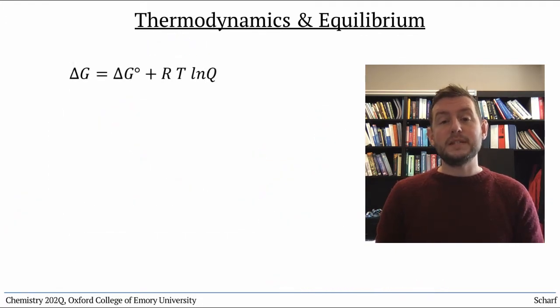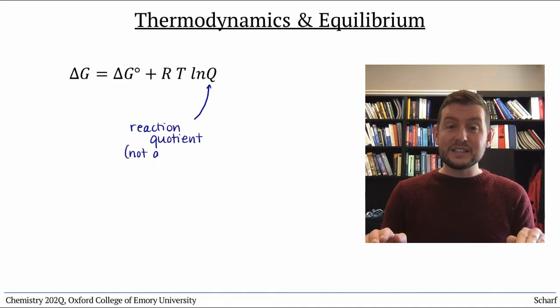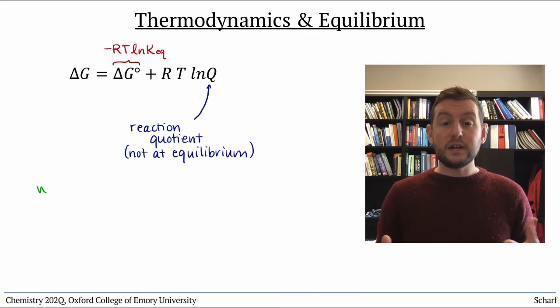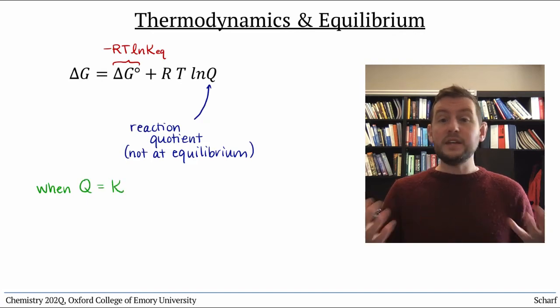The mathematical relationship is this: delta G equals delta G naught plus RT natural log of Q, where Q is the reaction quotient when you're not at equilibrium. If we substitute the equation from earlier, we can see that if Q equals K_eq, and we're at equilibrium, then delta G equals zero.